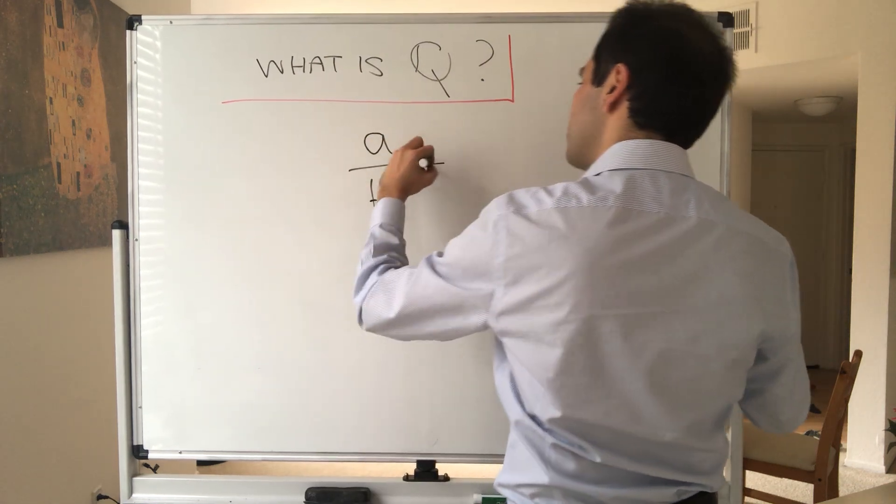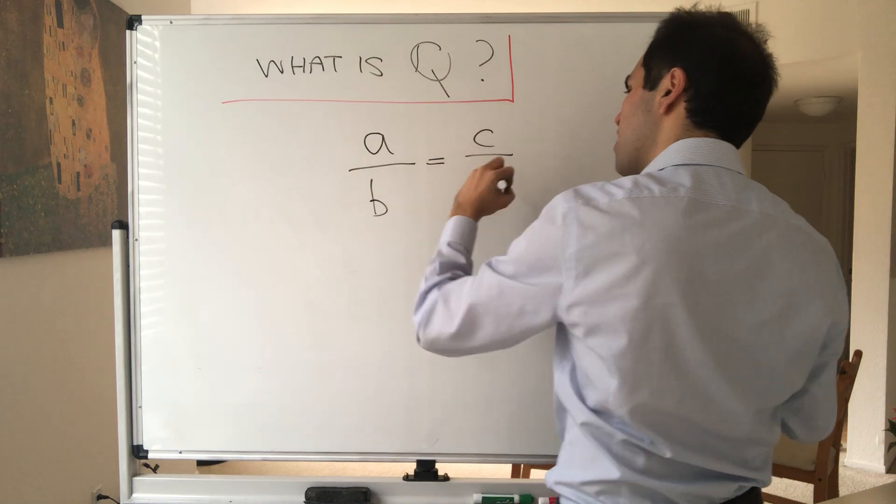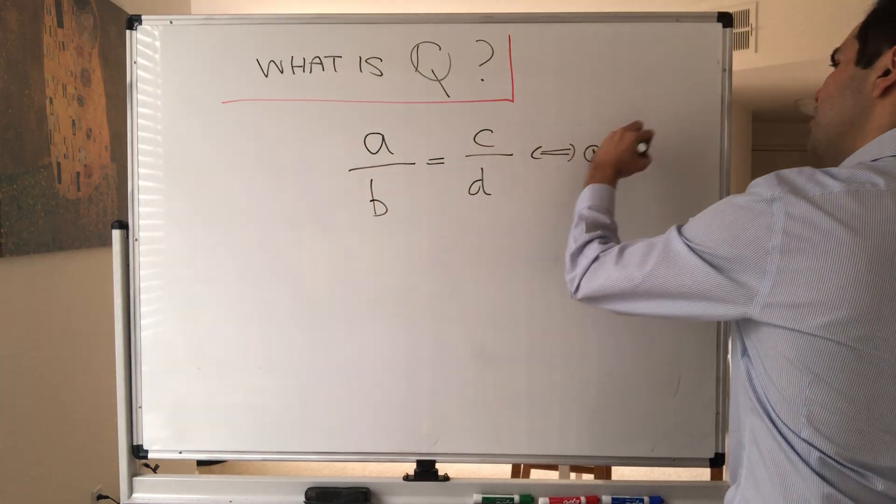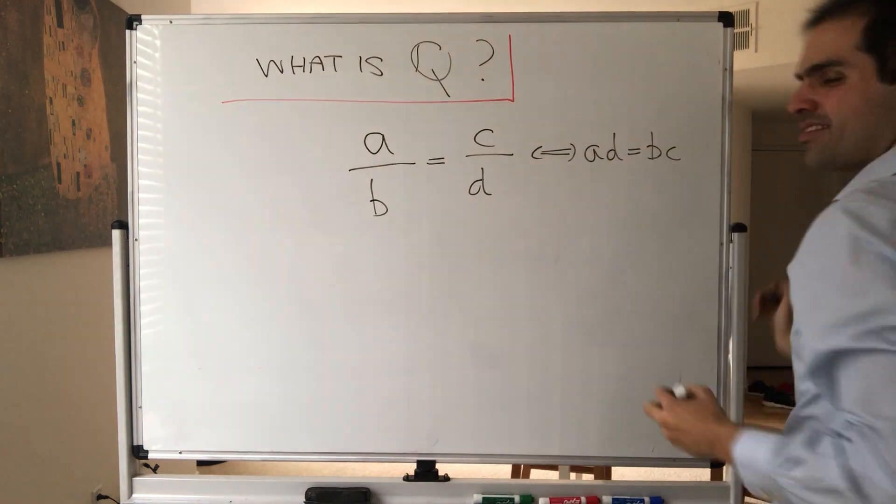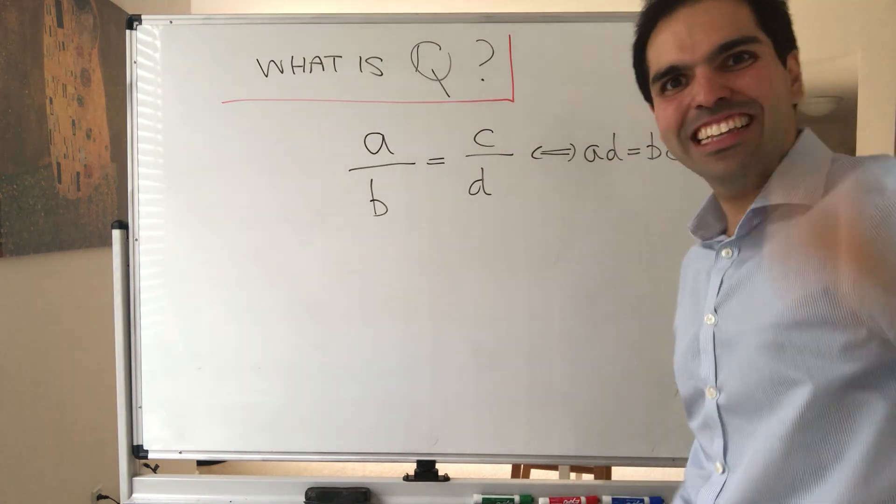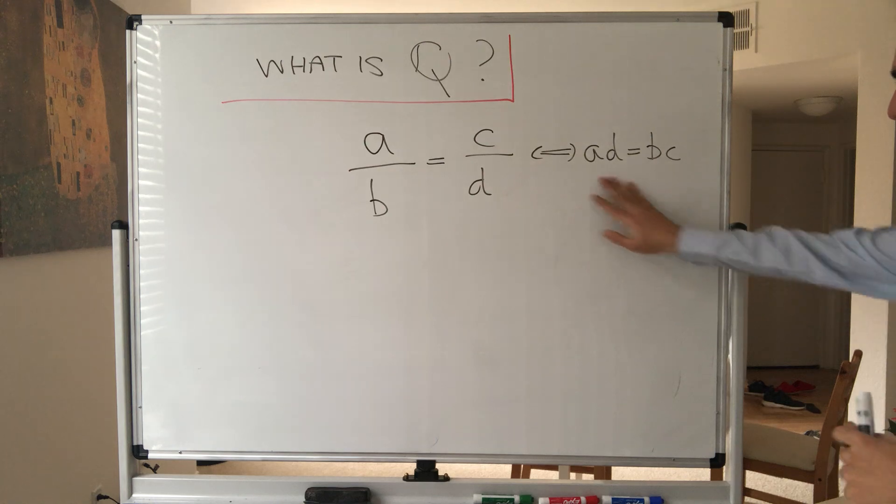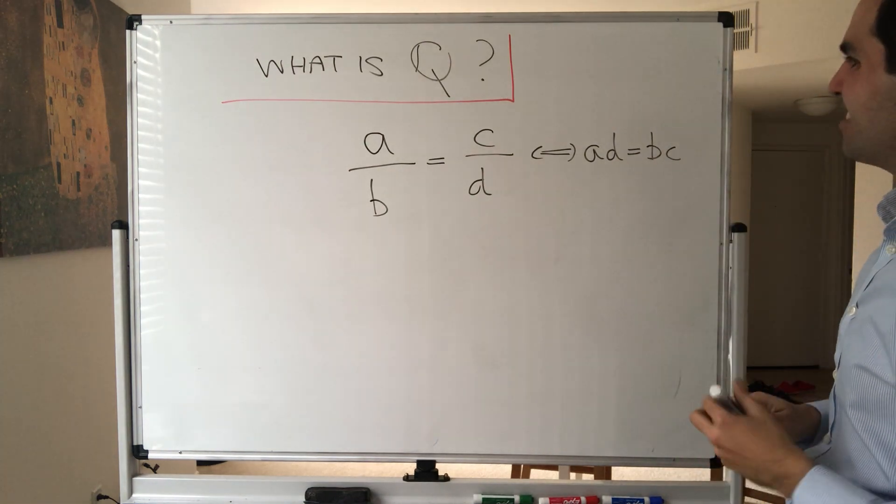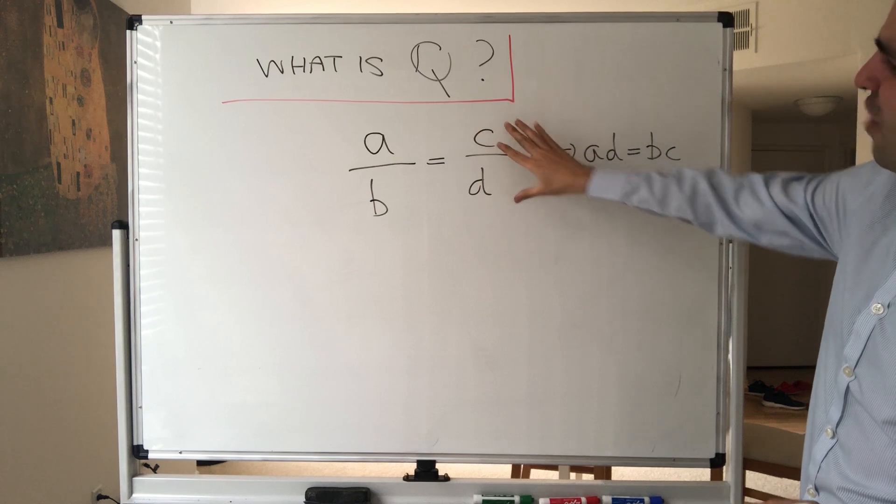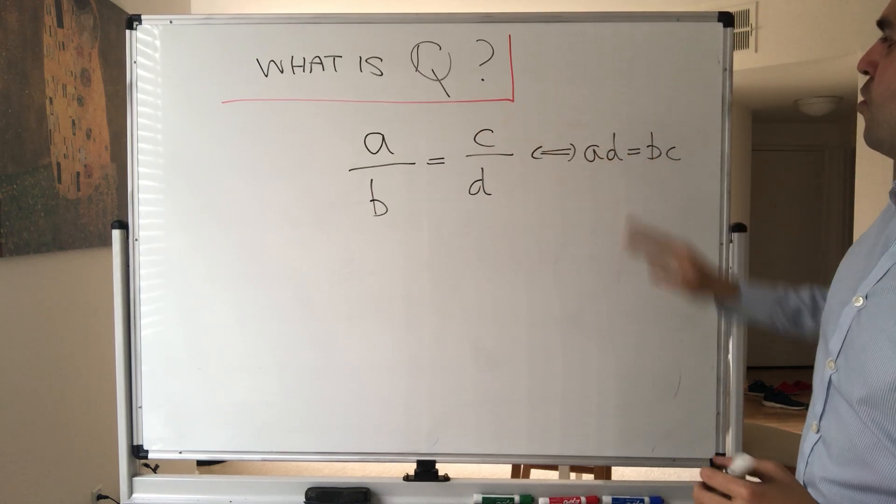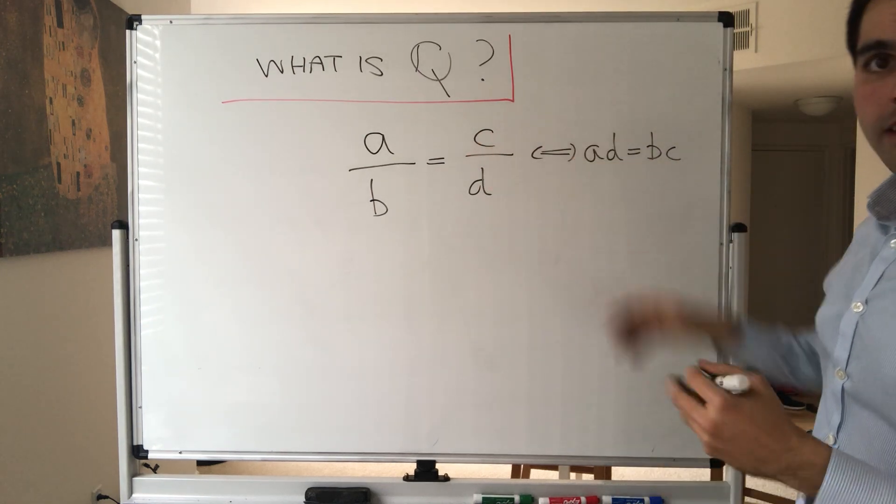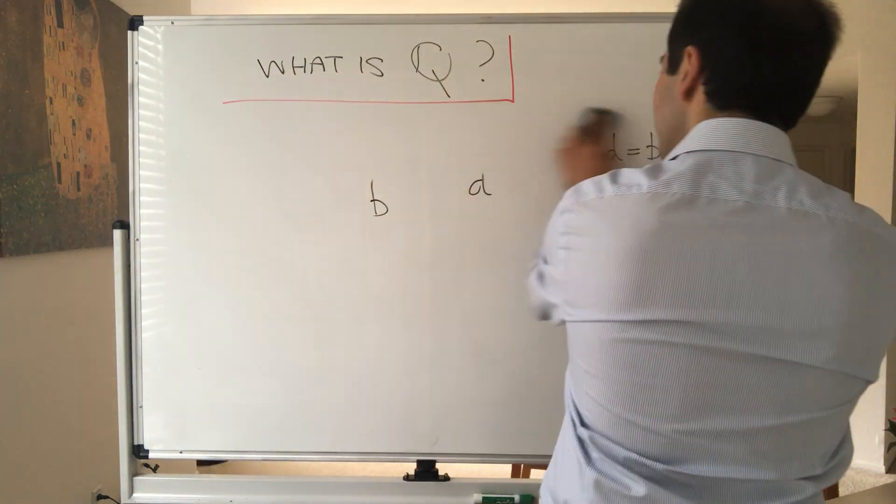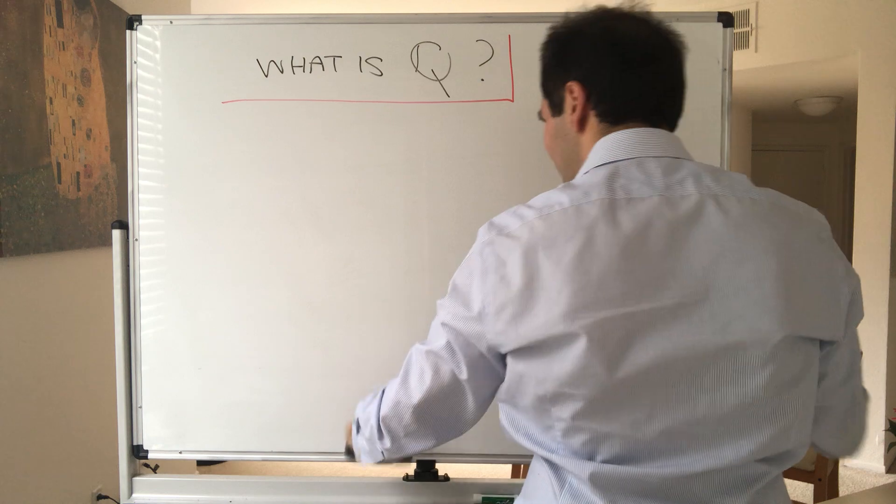What does it mean for two fractions to be equal? Well, that's the same thing as saying AD equals BC. I know determinant gang raise your hand, but I don't know what that has to do with determinants. But still, so in other words, two fractions are the same if and only if the cross things are the same. And therefore, what we would like to do is define fractions as follows.